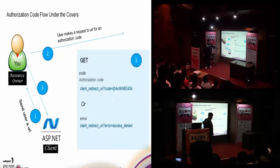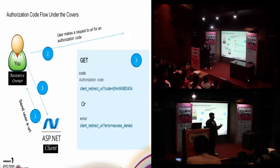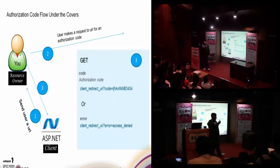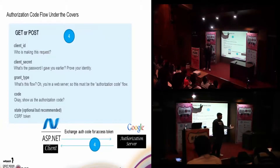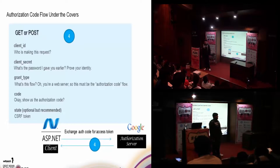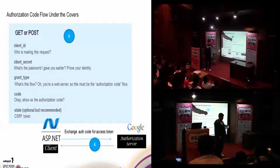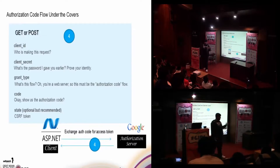The browser honors the 302 and redirects to the client, so the client application receives the code or an error message — this is a GET request because it's a redirect. In our application, we'll receive at a certain endpoint the code in a query string parameter. The next step is to exchange this code for an access token with the authorization server. You send either a GET or POST request — the OAuth framework does not say what type of request you need to send. Facebook can accept either GET or POST, but Google only wants a POST request. If you send a GET request to Google, it will return a 404.